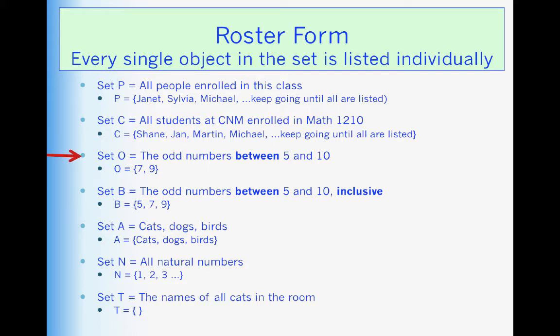Set O, the odd numbers between 5 and 10. Now when you say between, you do not include the endpoints. So I do not include 5 or 10. So the only odd numbers between 5 and 10 are 7 and 9. Now in set B, I've added the word inclusive at the end. That means I do include the endpoints. So the odd numbers between 5 and 10. I start with 5. It's included. Then 7. Then 9. And of course 10 is not included just simply because it's not an odd number.